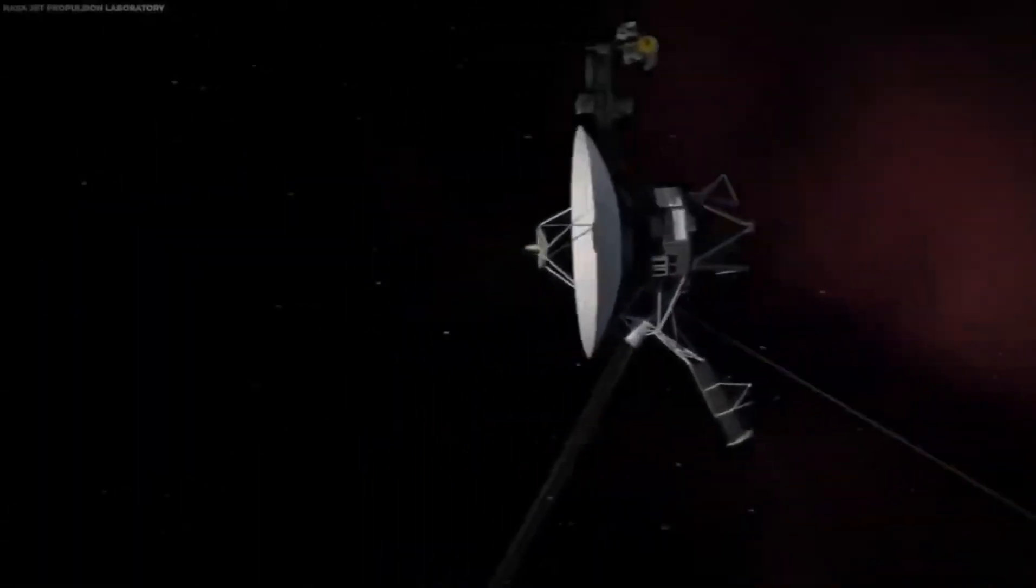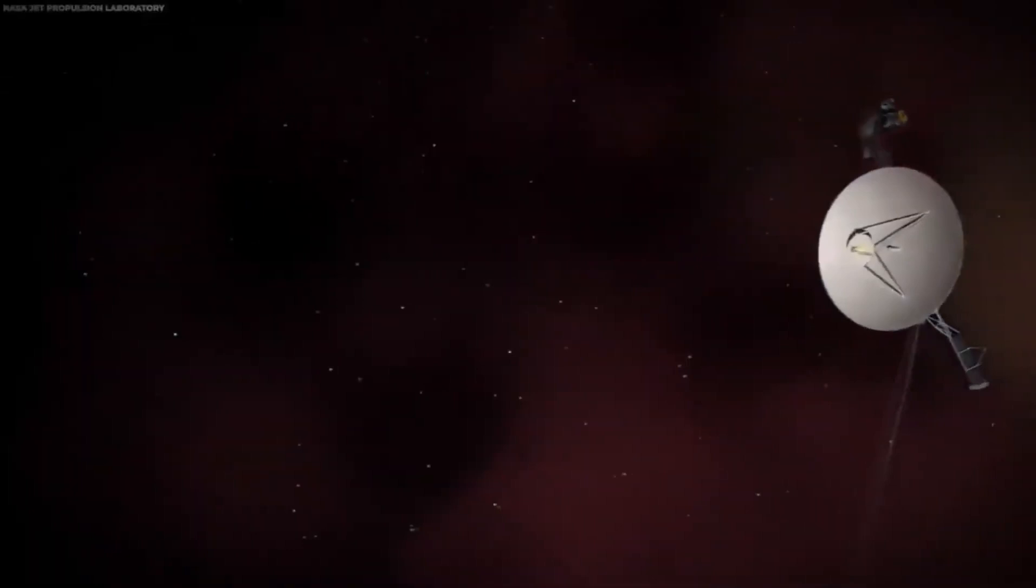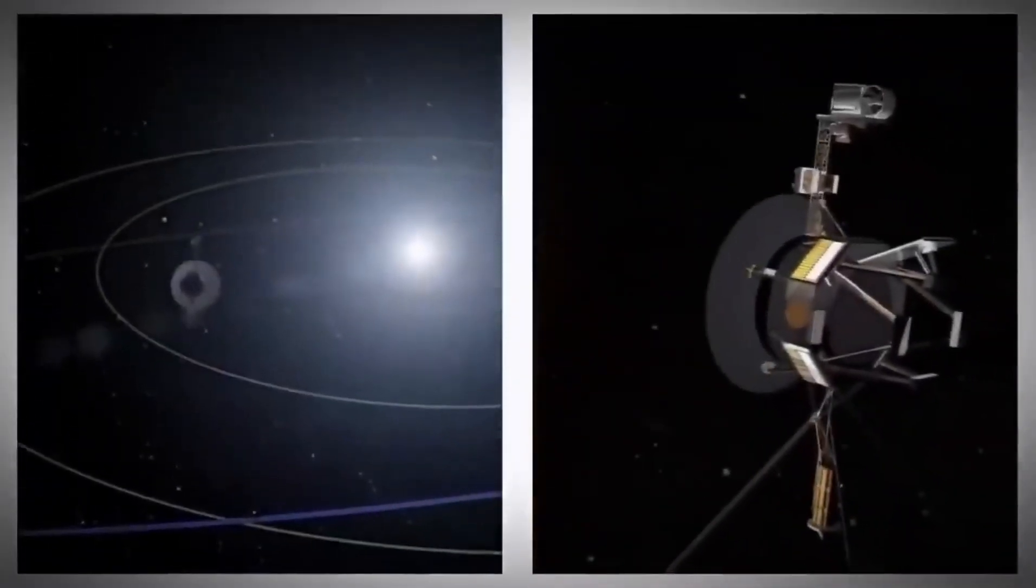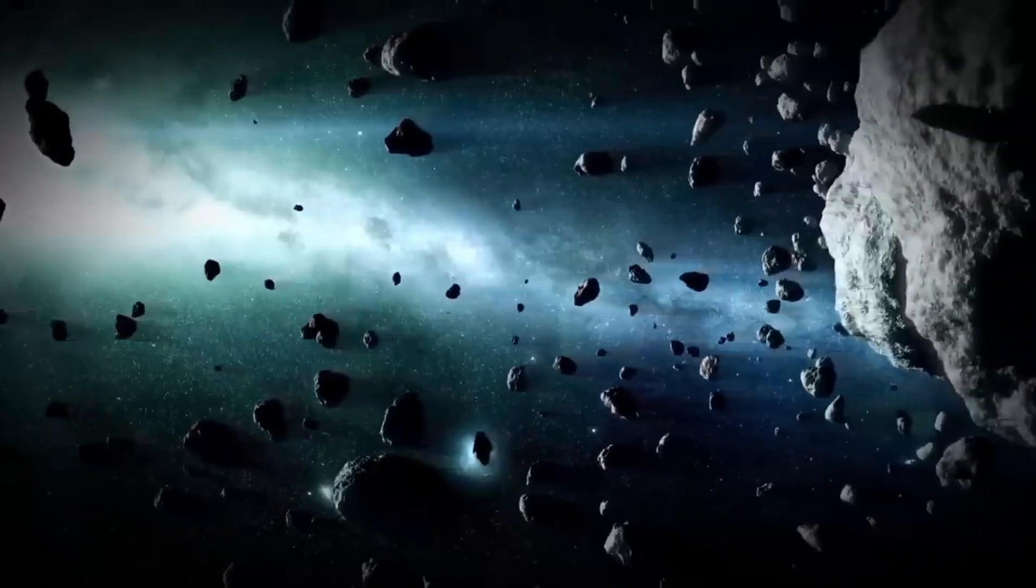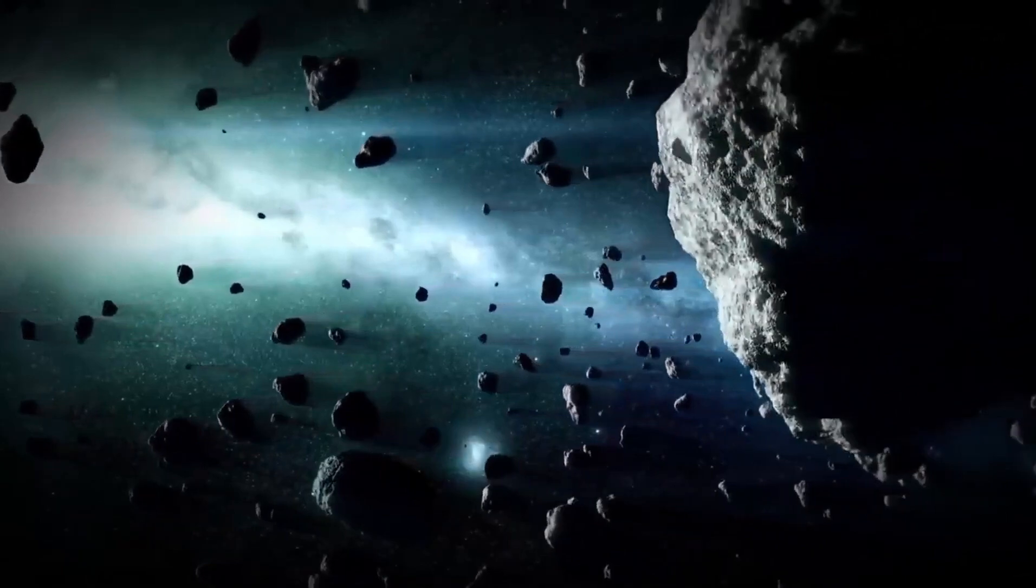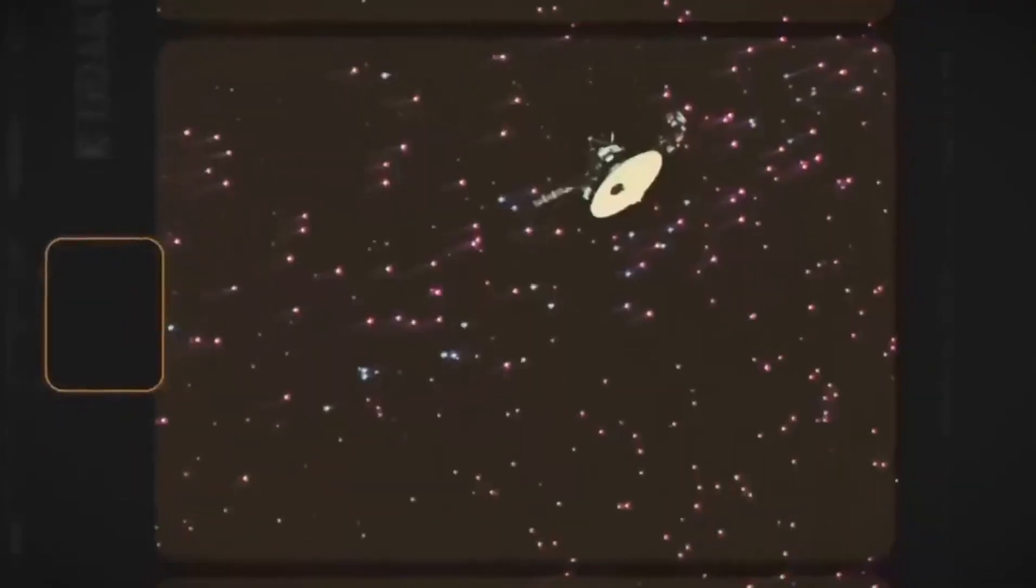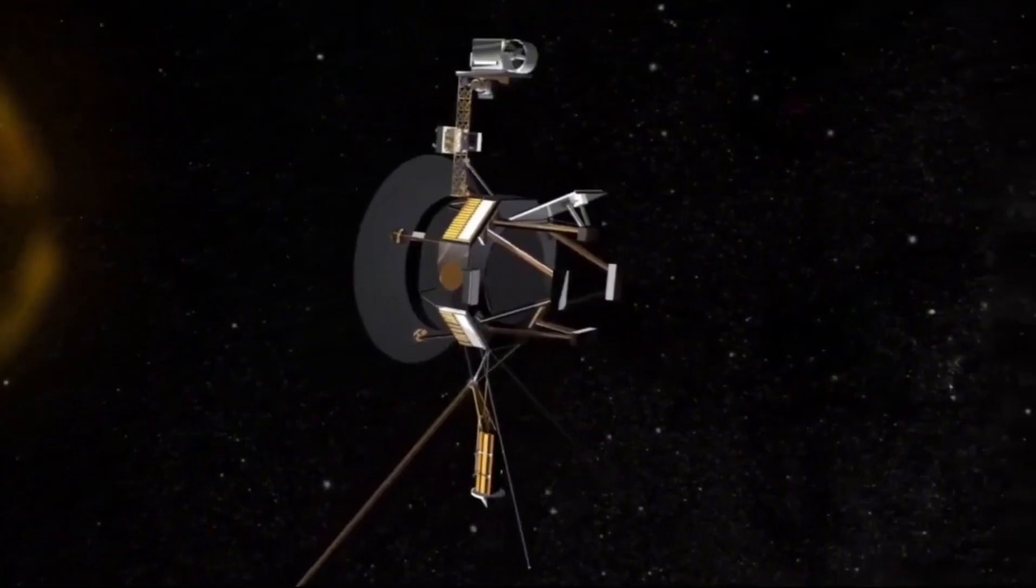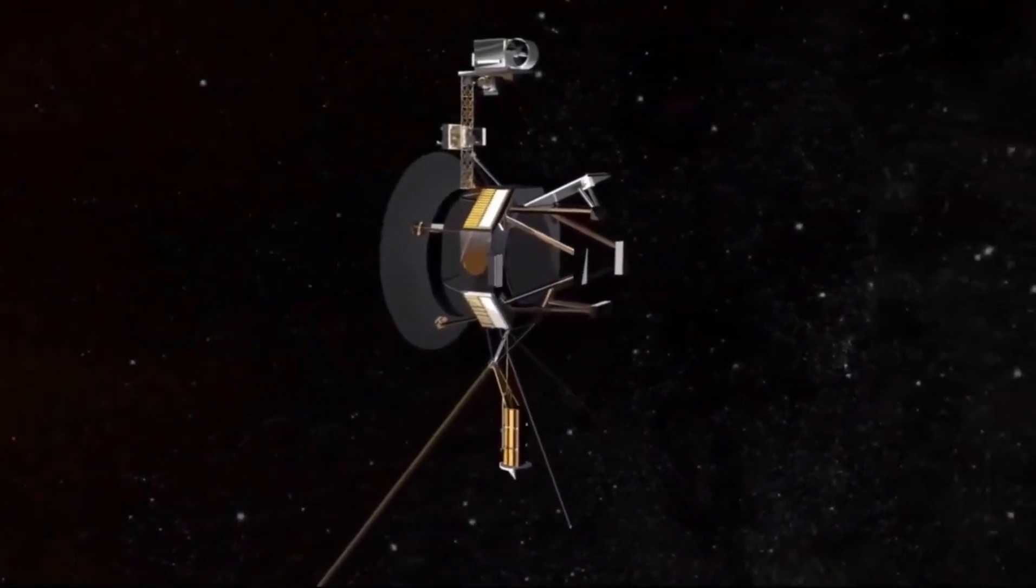Voyager 1 was launched after Voyager 2 because of a quicker path. It left the asteroid belt before its twin on December 15, 1977, and in April 1978, while it was around 165 million miles, 265 million kilometers, from the planet, it started its Jovian imaging mission.